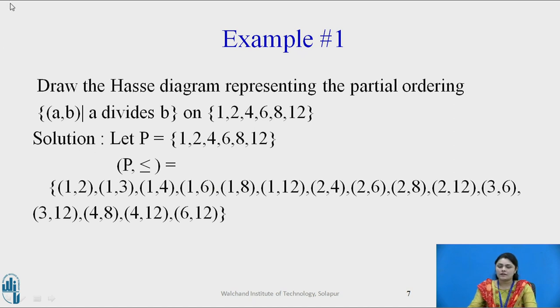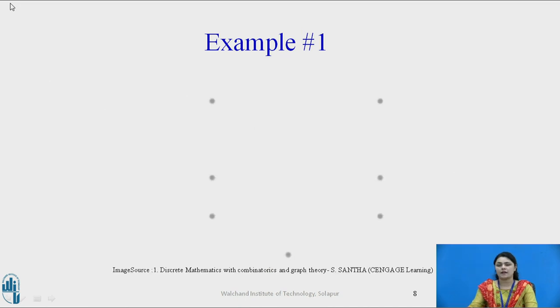Now let us see how to draw the diagram. So our initial condition is I will take 1. Right? So after 1 you can see next element was 2. So 2 is divisible by 1. So I will connect 1.